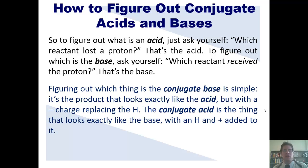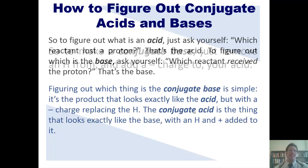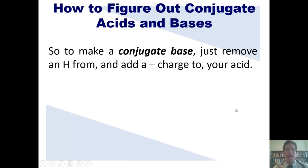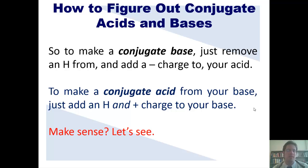Figuring out the conjugate base is simple: it's the product that looks exactly like the acid, but with a minus charge replacing the hydrogen. The conjugate acid is the thing that looks exactly like the base, except with a hydrogen and a plus charge added to it. To make a conjugate base, just remove a hydrogen from and add a negative charge to your acid. To make a conjugate acid from a base, just add a hydrogen and a plus charge to your base.